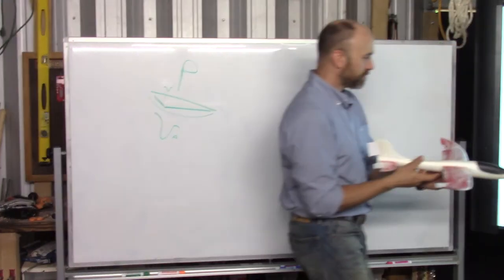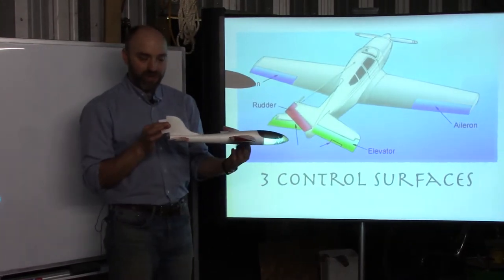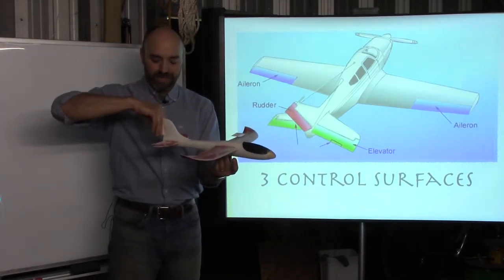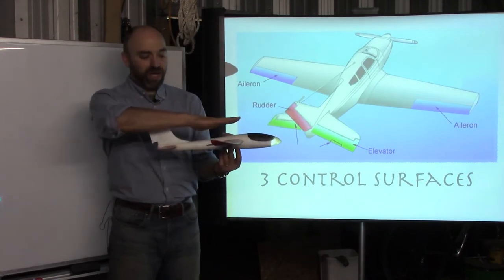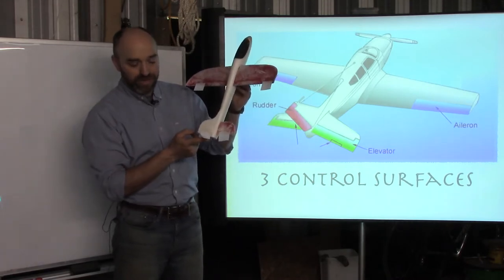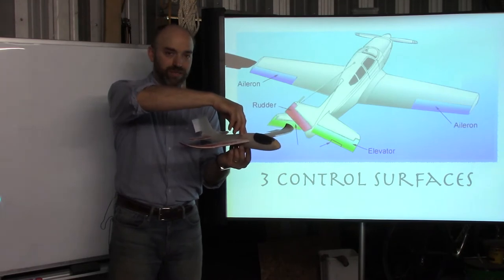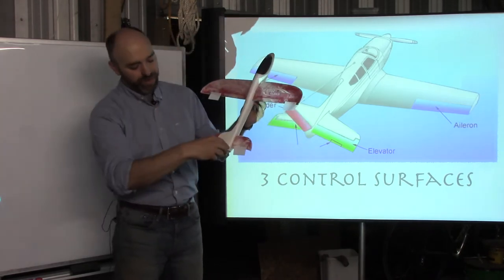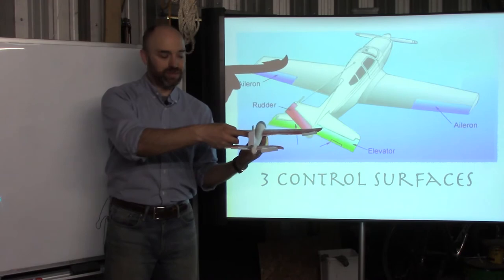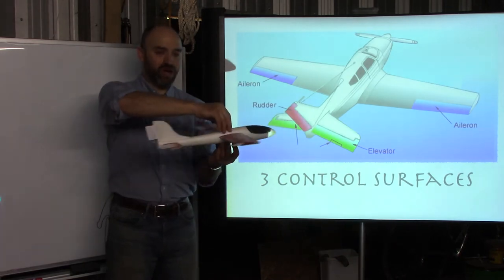The second control surface is the rudder, located on the vertical stabilizer at the back. The rudder controls the yaw axis. If the pilot wants to yaw right, they point the rudder to the right — it pushes the tail sideways, yawing the plane right. To go left, the pilot turns the rudder left, which yaws the plane to the left.